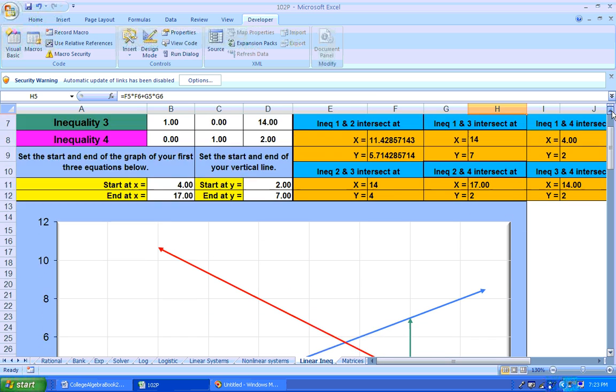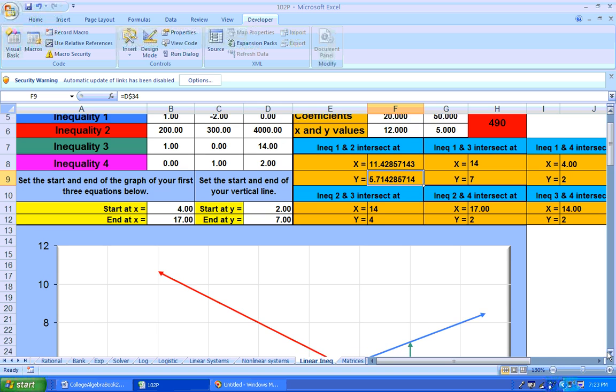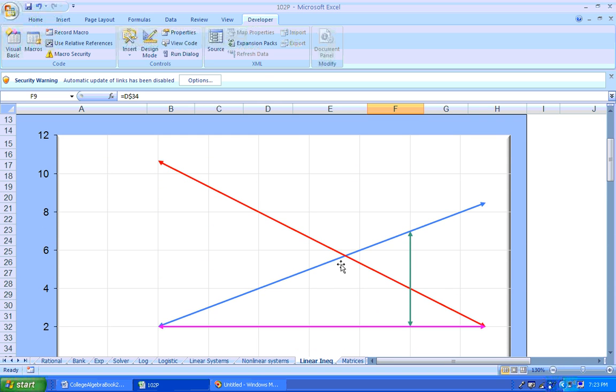And the y part of that point of intersection is actually 5 point something. If we look where equation 1 and equation 2 intersect, the y part of it is 5.7. Now you can't have a fractional amount of DVD players. You can't have 5.7 DVD players. So it's either 5 or 6.